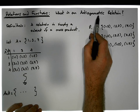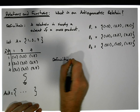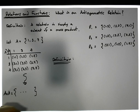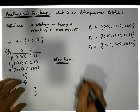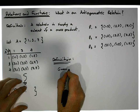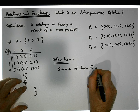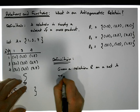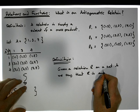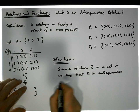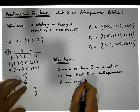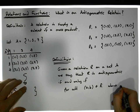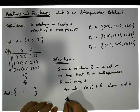We're interested in defining the concept of anti-symmetry, so we need a definition. Like all our definitions, to test whether a relation is anti-symmetric we need a relation to start with. So: given a relation OR on a set A, we say that OR is anti-symmetric if and only if, for all (a, b) in OR where a is not equal to b,